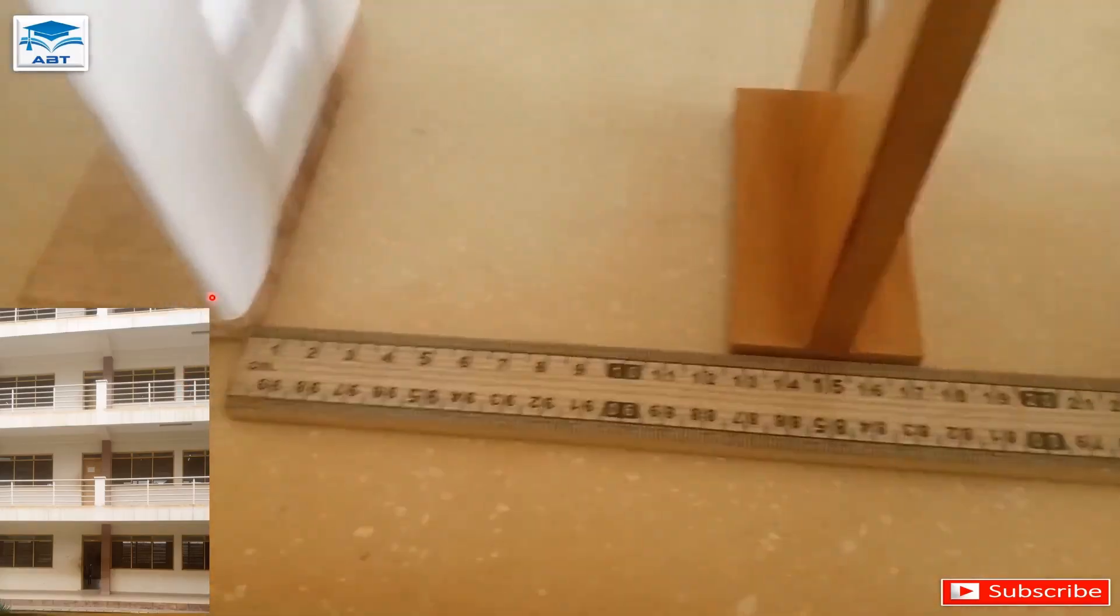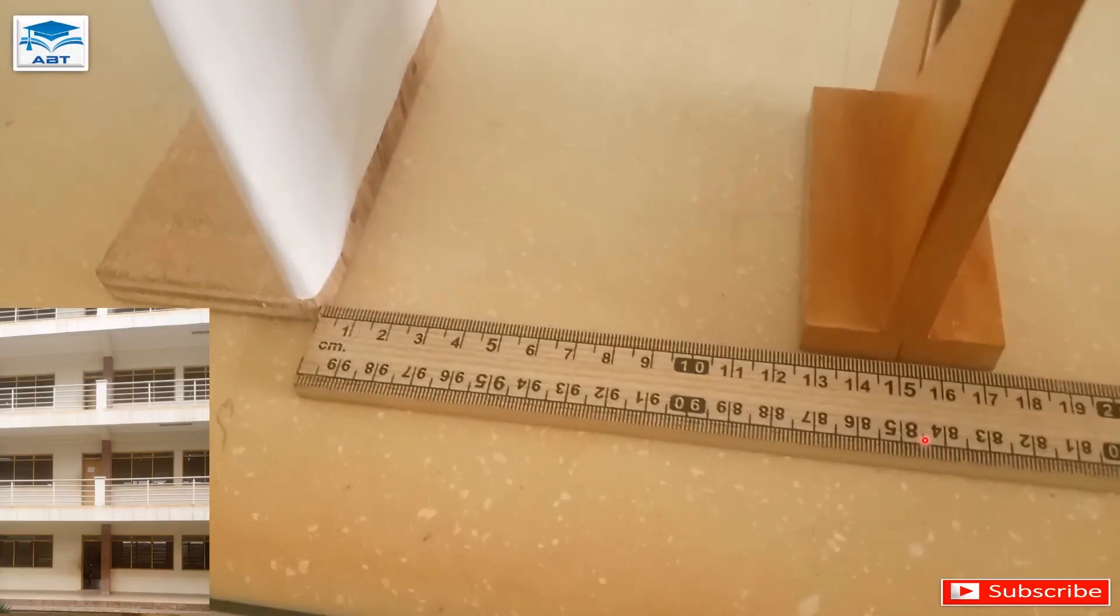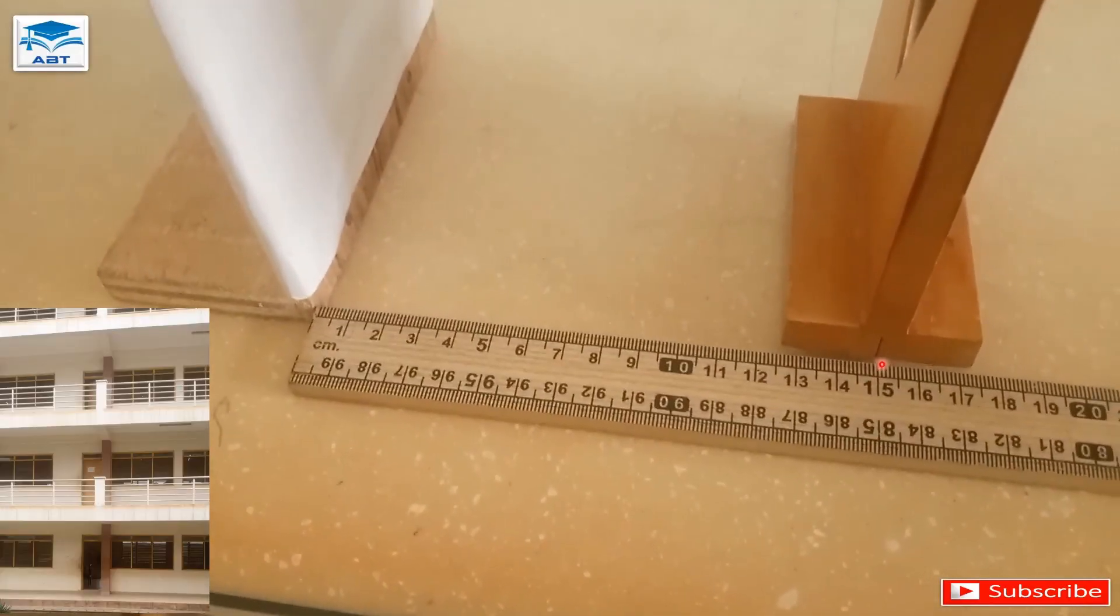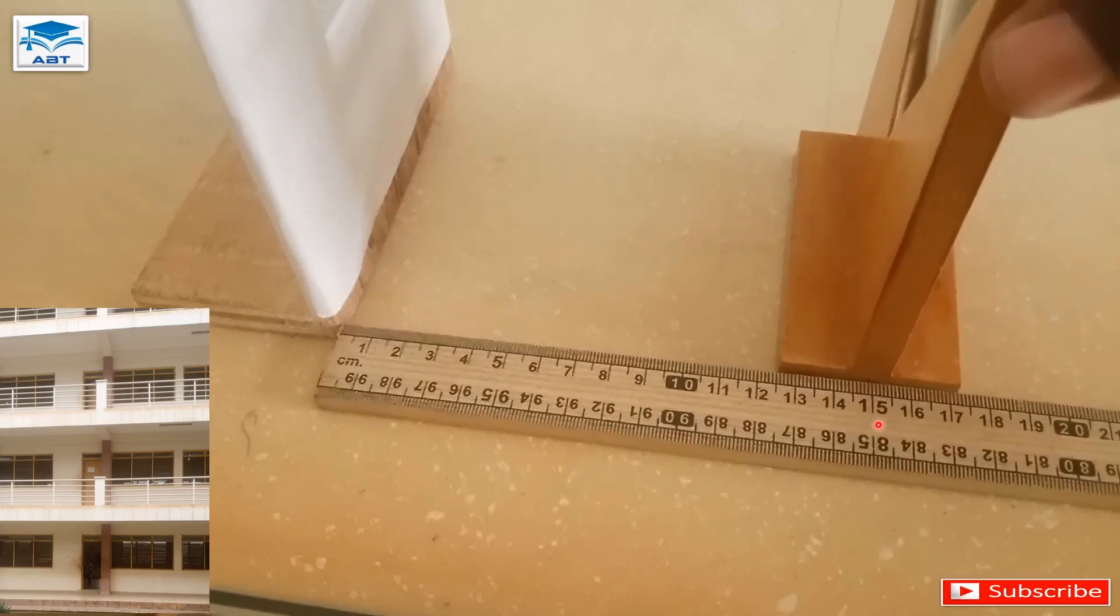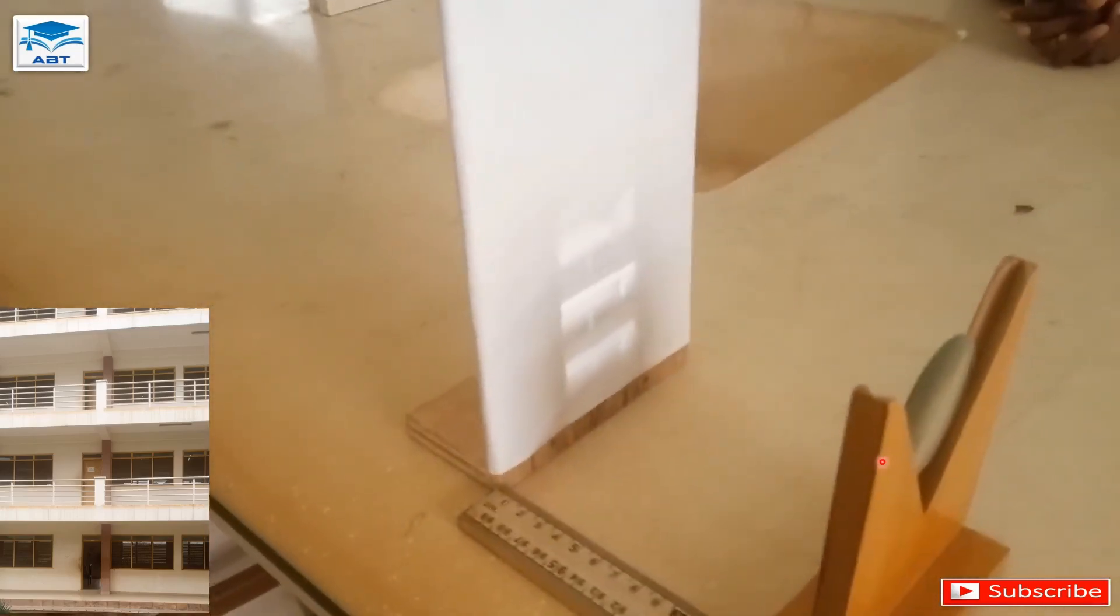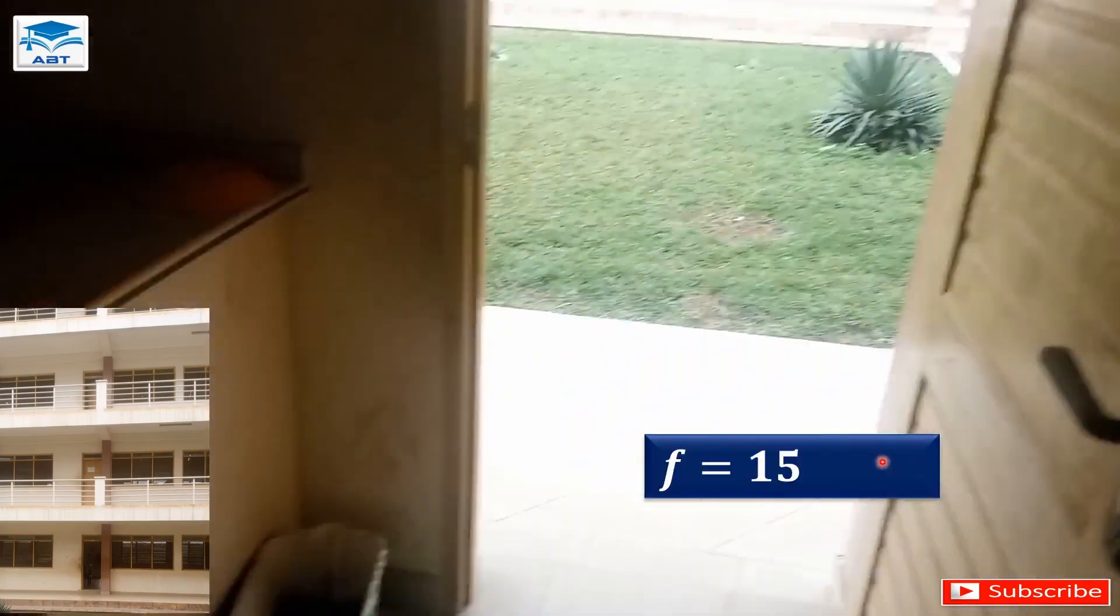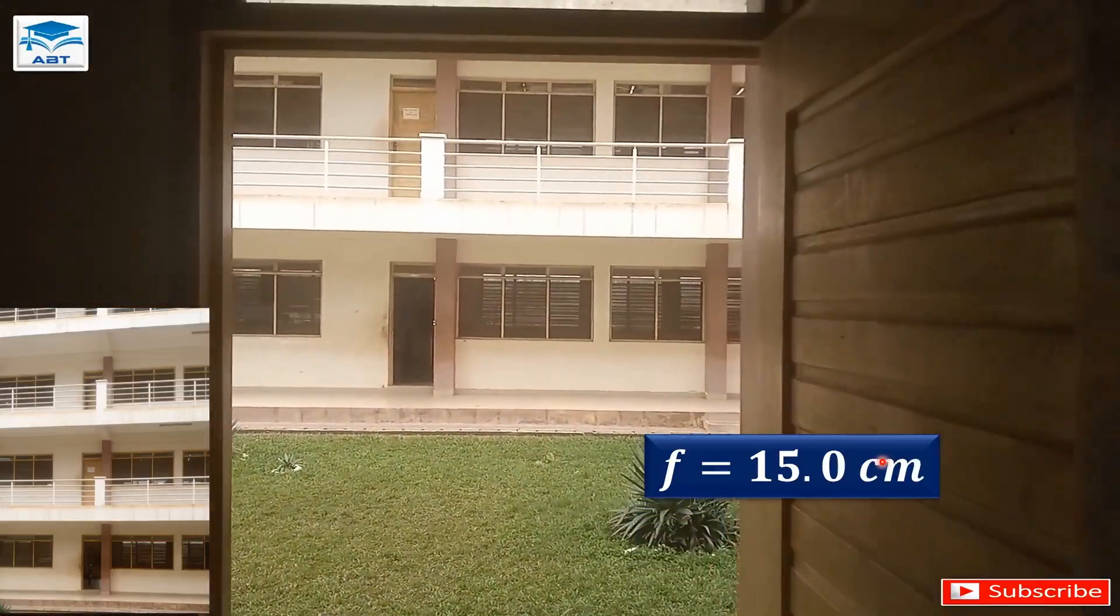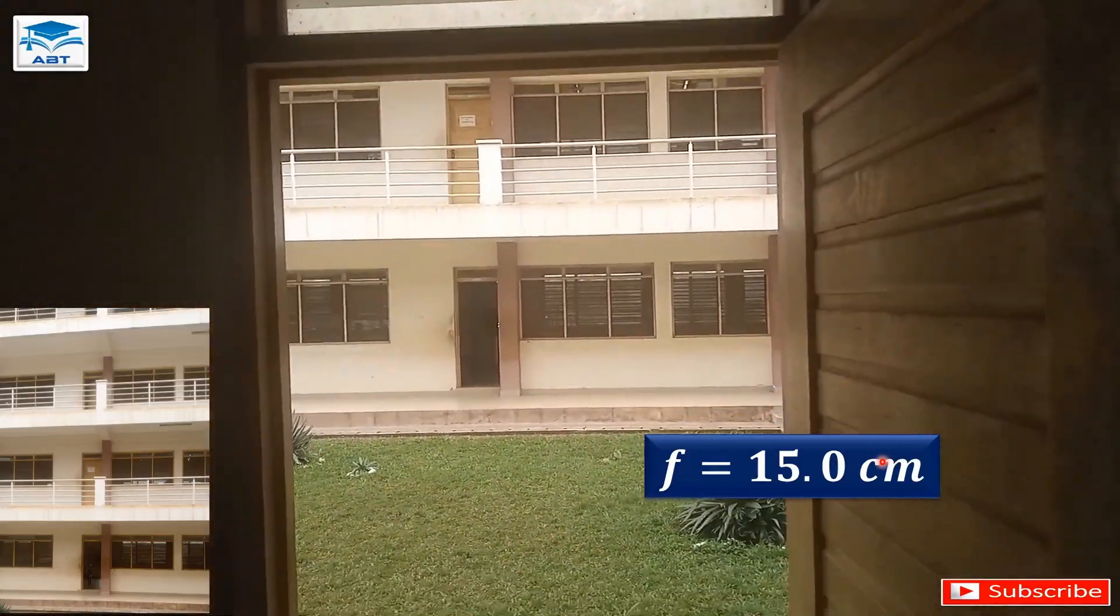Then we measure the distance between the screen and the center mark of the lens holder, and it's 15 centimeters. That is the focal length of the converging lens, so f is 15.0 centimeters.